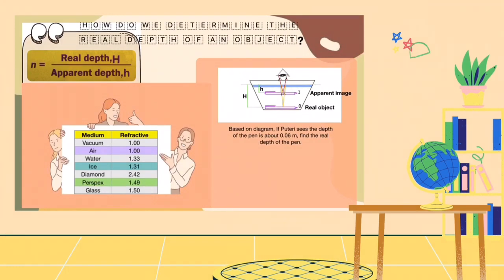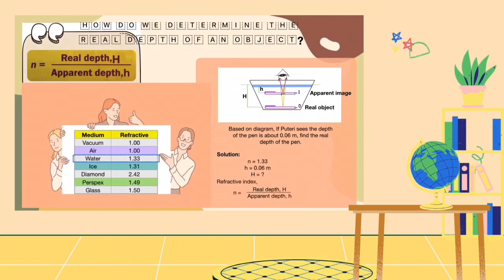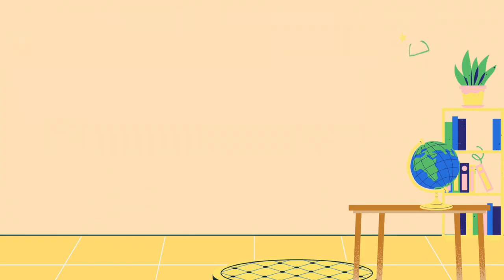For example, you see the pen is located in the water at the depth of 0.06 meters and we know that the refractive index of water is 1.33. Then, by multiplying 1.33 with 0.06, we can determine the value of real depth of the pen which is 0.08 meters. Easy, right?